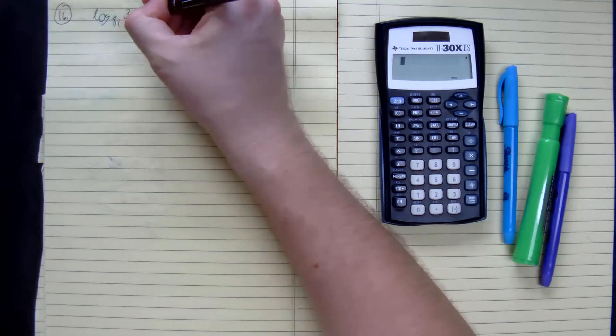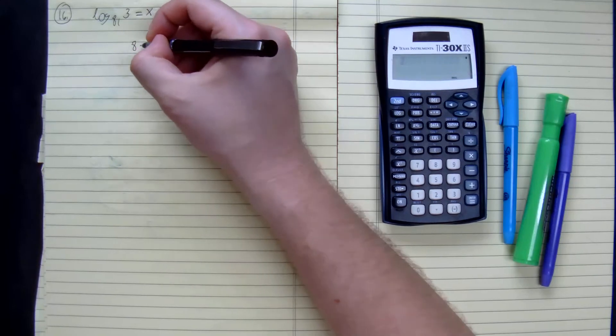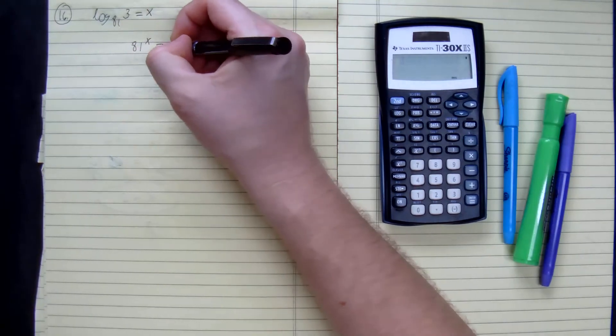We can just pretend it equals x. Since we're evaluating, we get 81 to the power of x equals 3.